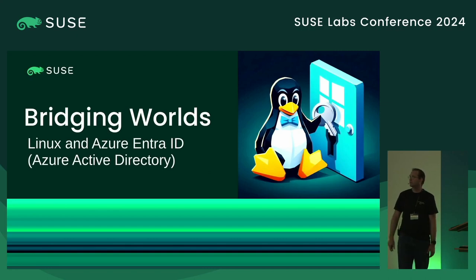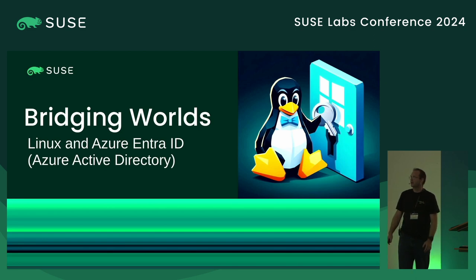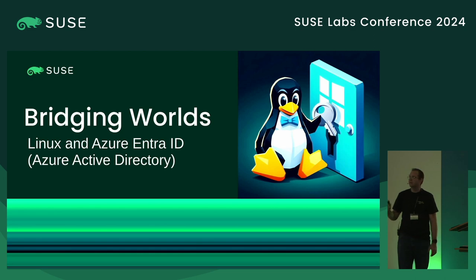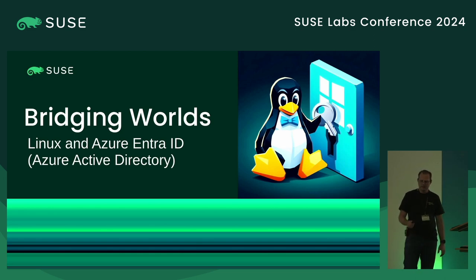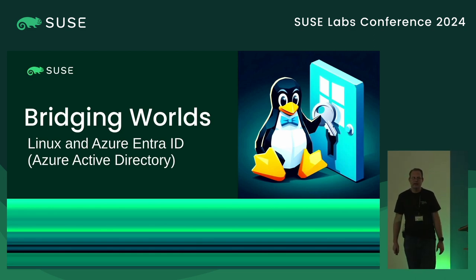Welcome to my talk, Bridging Worlds. We're going to talk about connecting Linux to Azure Entra ID, formerly known as Azure Active Directory — essentially an OAuth provider in the Azure Cloud.